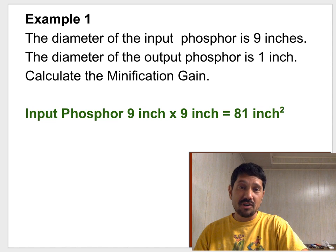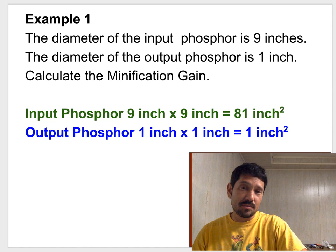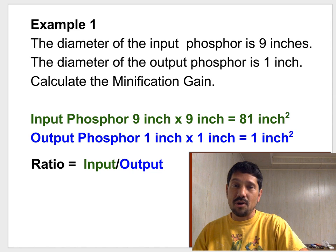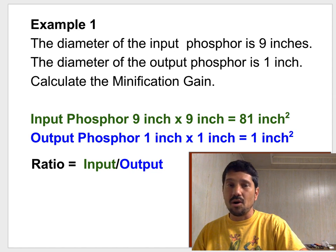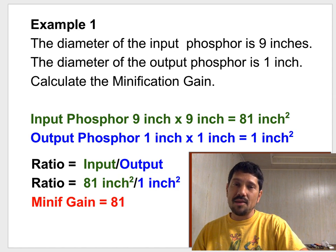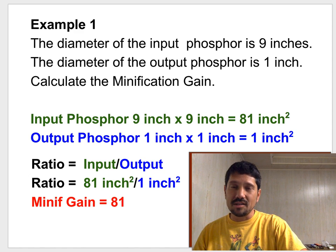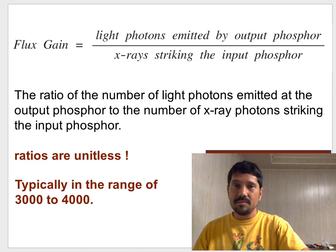An example would be you have an input phosphor of 9-inch diameter and an output phosphor of 1-inch. Calculate the gain. So the input phosphor, you'd take 9-inch by 9-inch to get 81-inches squared. The output phosphor you would multiply by itself to get 1-inch squared. And for the minification gain you would put the input over the output. The big number over the small number. And you would end up with 81-inches squared over 1-inch squared resulting in a minification gain of 81. And they're unitless.